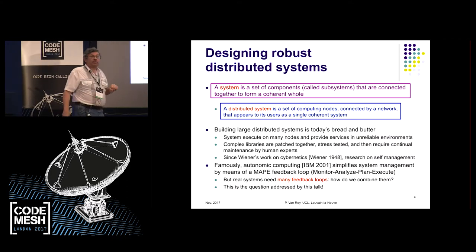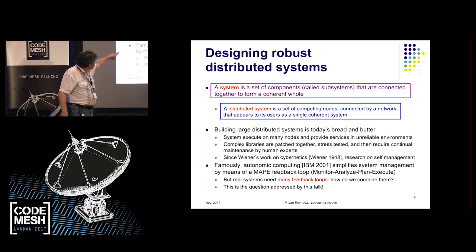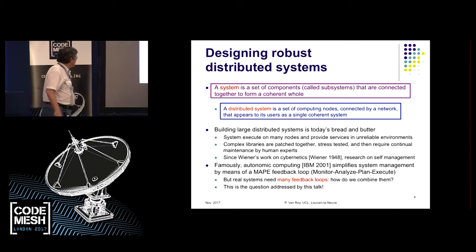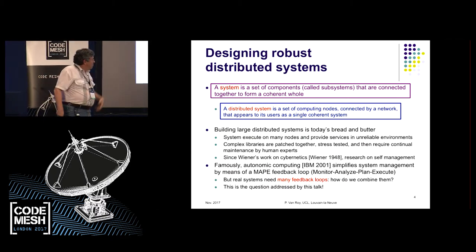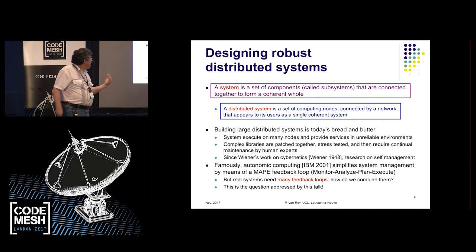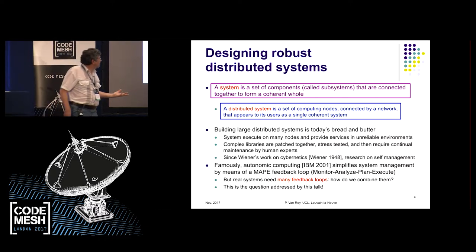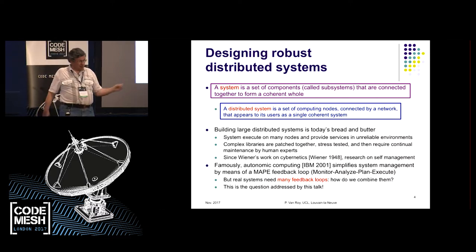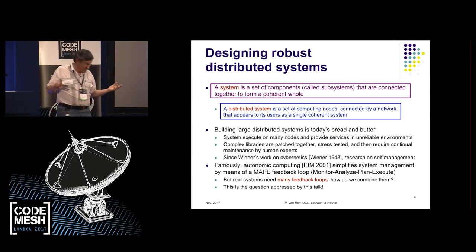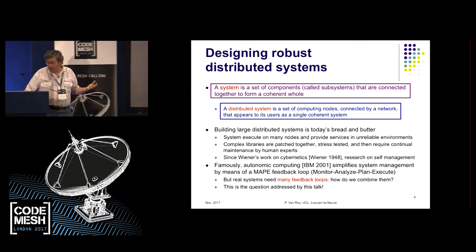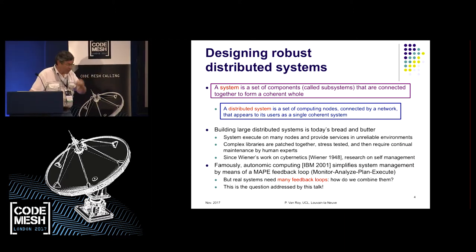There's a famous initiative from 2001 called Autonomic Computing by IBM, which uses a loop called a MAPE loop — monitor, analyze, plan, execute — to simplify system management. It's a very nice loop, but one loop is very few. Systems need many loops. So how do we combine feedback loops? That's what I want to talk about.